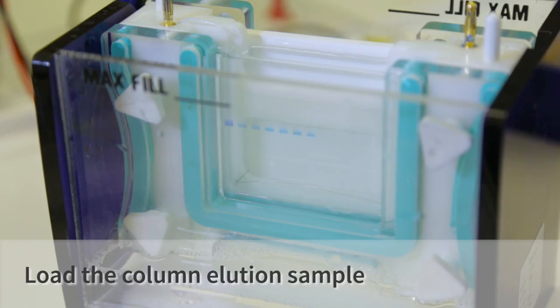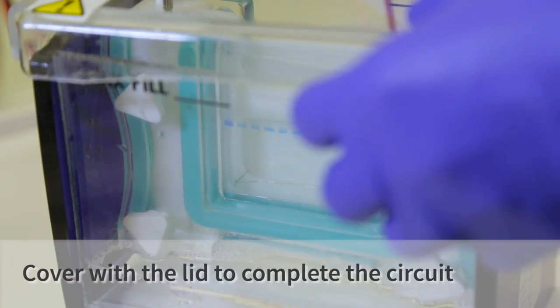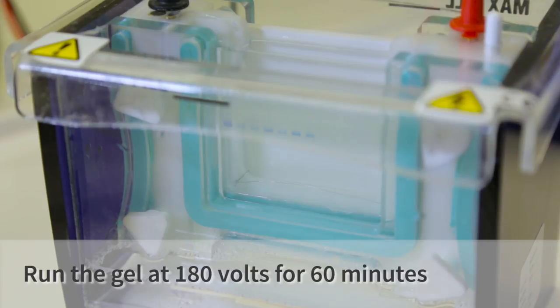Now the final sample is our elution. So this will be when we added the imidazole and eluted our protein. So hopefully only our protein should be present. Now all our samples are loaded, put the lid on the tank, and set it to run 180 volts for 60 minutes.